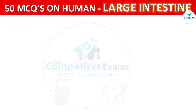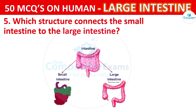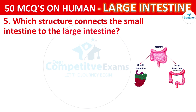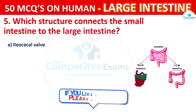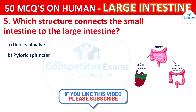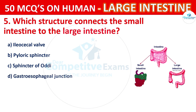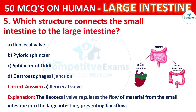Question number 5. Which structure connects the Small Intestine to the Large Intestine? Your options are: Ileocecal Valve, Pyloric Sphincter, or Gastroesophageal Junction. The correct answer is the Ileocecal Valve. The Ileocecal Valve regulates the flow of material from the Small Intestine into the Large Intestine, preventing backflow.